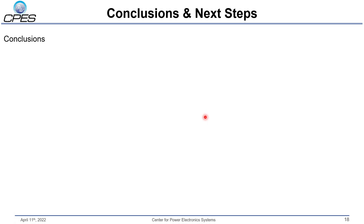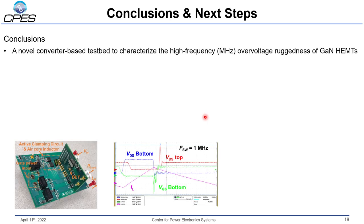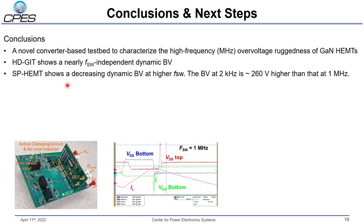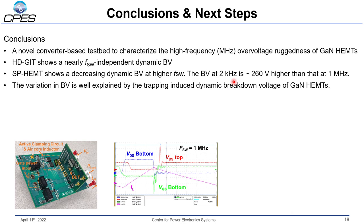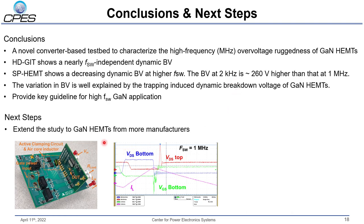In conclusion, we built a novel converter-based test setup to characterize the high-frequency overvoltage ruggedness of commercial GaN HEMTs. The HPGIT shows a nearly frequency-independent dynamic breakdown voltage. The SP-HEMT shows a decrease in dynamic breakdown voltage at higher frequency — the breakdown voltage at 2 kHz is around 260 V higher than at 1 MHz. This variation is well explained by trap-induced dynamic breakdown voltage in GaN HEMTs. We provide key guidelines for high-frequency GaN applications regarding the true breakdown voltage achievable in high-frequency operation. As a next step, we will extend this study to other types of GaN HEMTs from more manufacturers to confirm whether this phenomenon is universal in commercial GaN HEMTs.